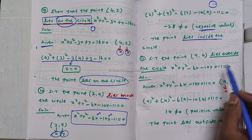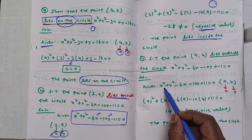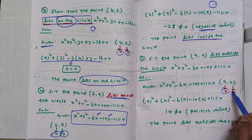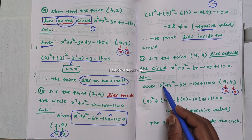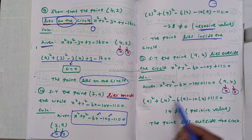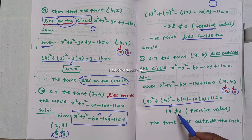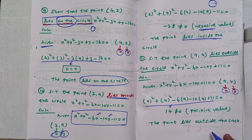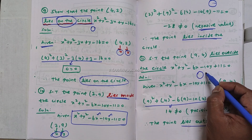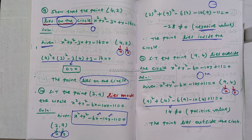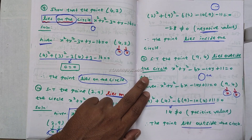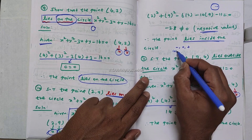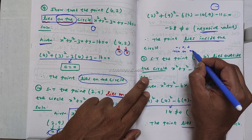Show that the point (9, 4) lies outside the circle. Given equation: x squared plus y squared minus 6x minus 10y plus 11 equal to zero. Substituting x equals 9 and y equals 4 gives a positive value. Since the result is positive, the point lies outside the circle.